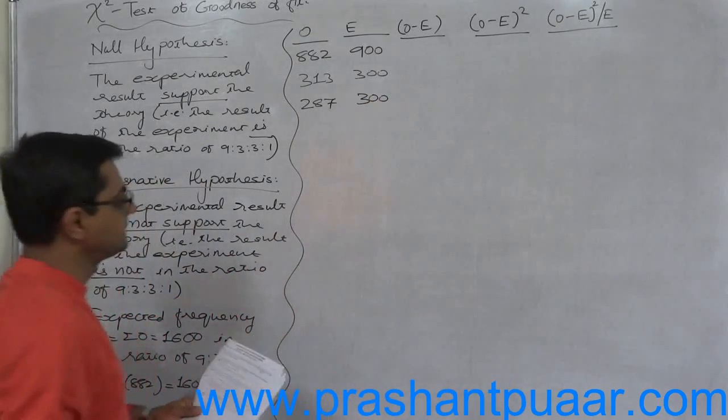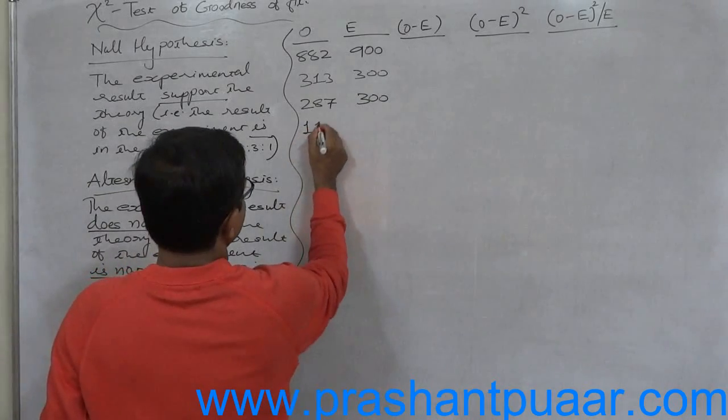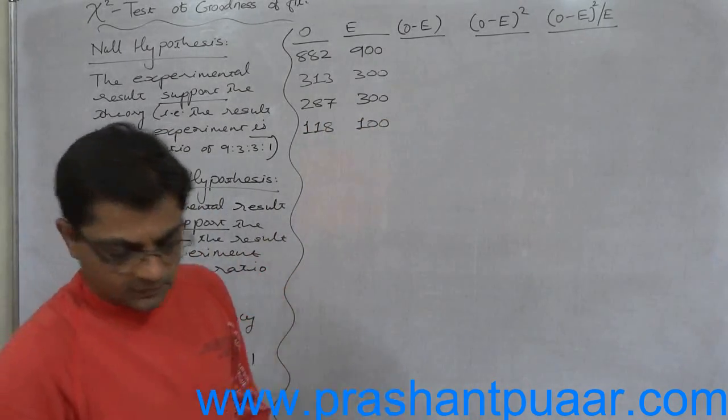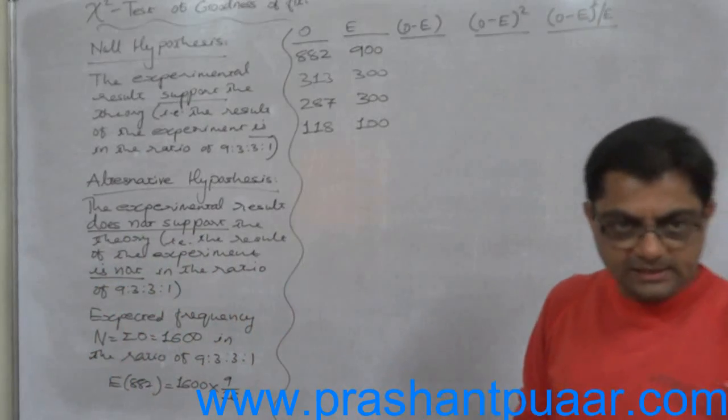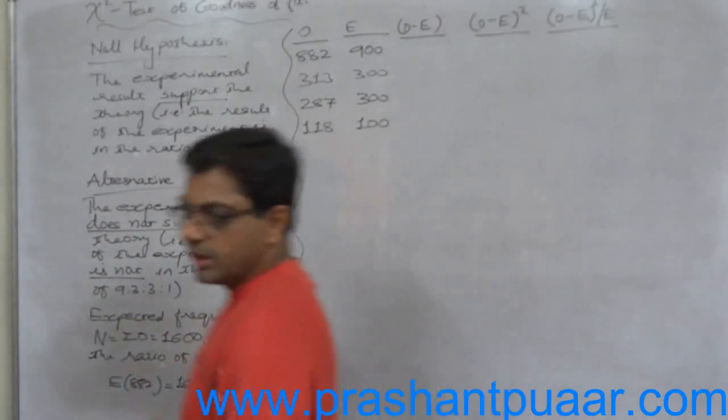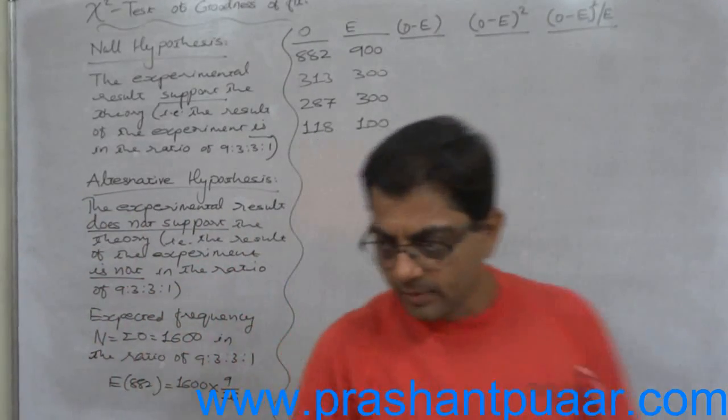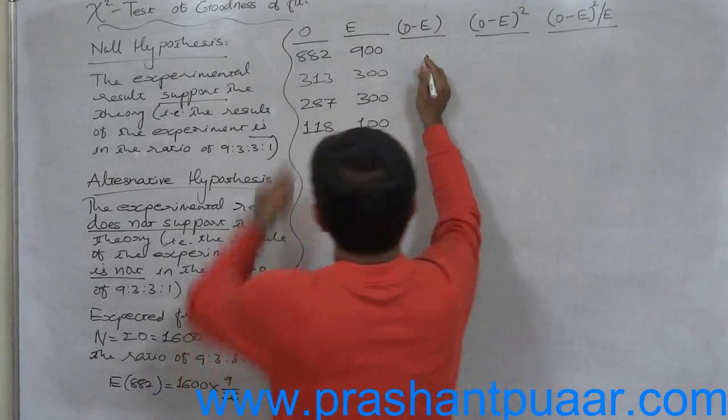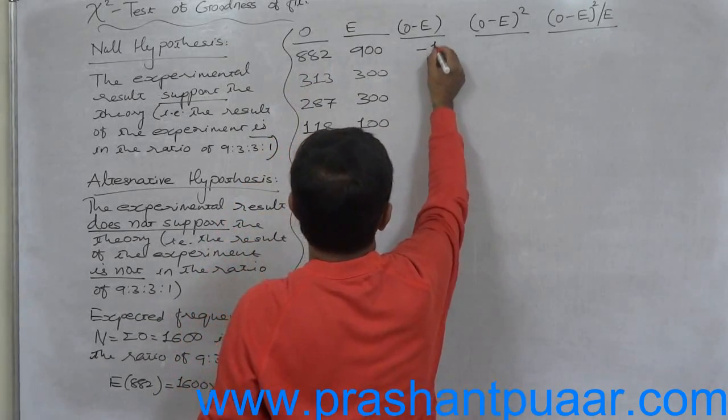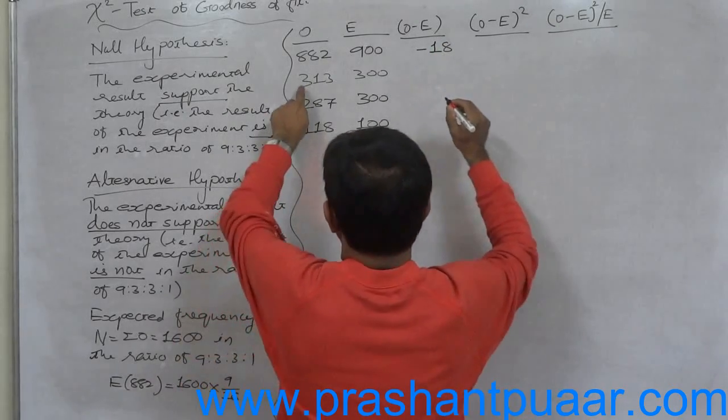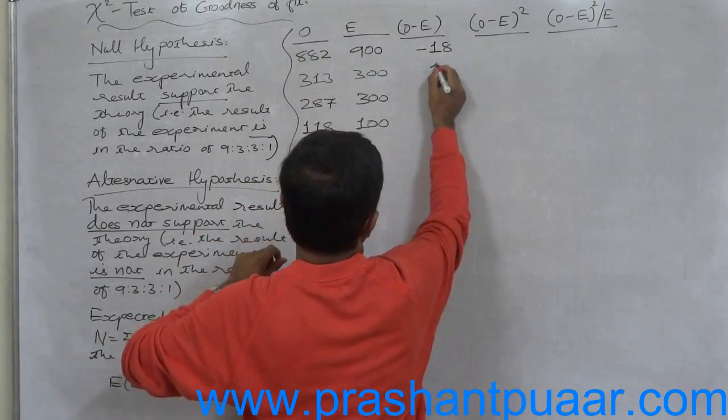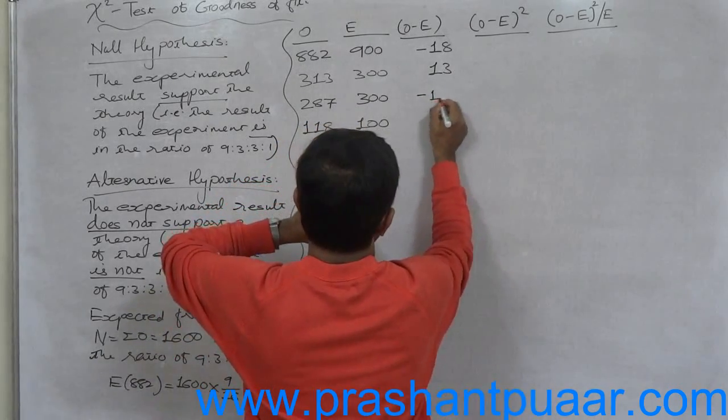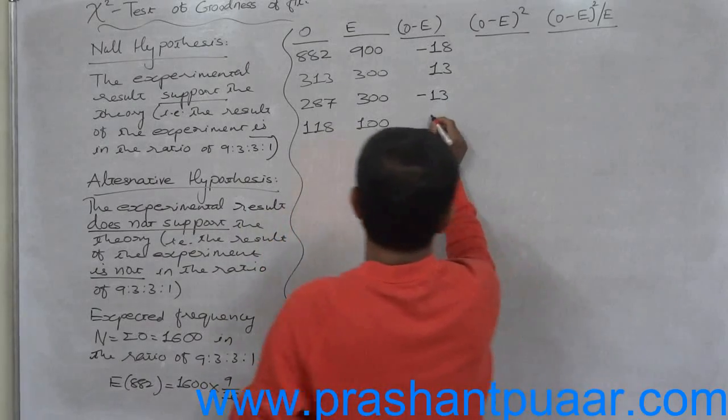Once again, no expected frequency is less than 5, so no need of merger with greater frequency. O minus E: 882 minus 900 equals minus 18, 313 minus 300 equals positive 13, 287 minus 300 equals negative 13, 118 minus 100 equals positive 18.